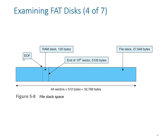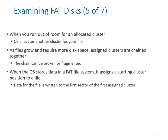When a cluster runs out of room, the operating system allocates another cluster for the file. As a file grows and requires more disk space, clusters are chained together, indicating continuation of the data. As a result, a larger file can be broken or fragmented when the operating system stores it on a FAT file system. It assigns a starting cluster position in the file, which is maintained in the initial sector — the master database of all files stored on the computer.